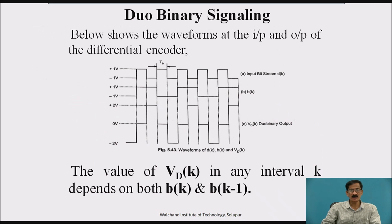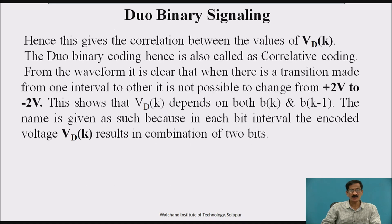This is the duobinary signal in which b k and b k minus 1 is been compared to give the output v d k. Hence, this gives the correlation between the values of v d k. The duobinary coding hence is also called as correlation coding.